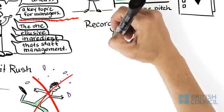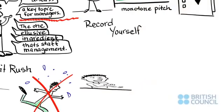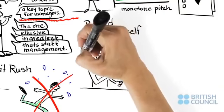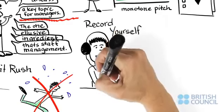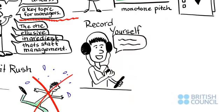Recording yourself can be very useful. Try to apply what you've learned about the different features of pronunciation in English. Chunking is a particular skill you can develop by recording yourself.